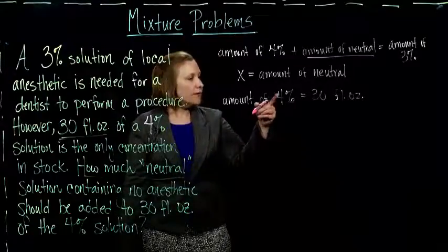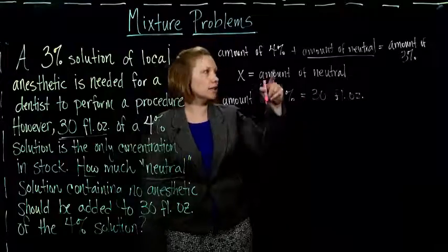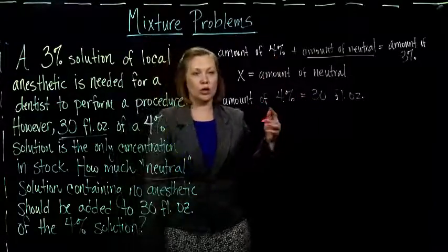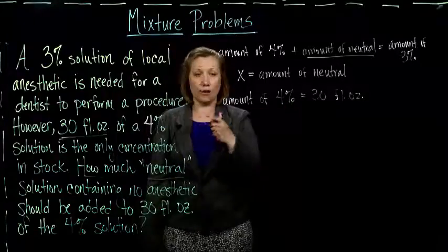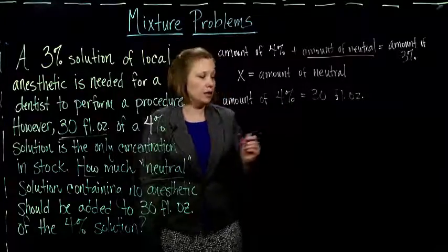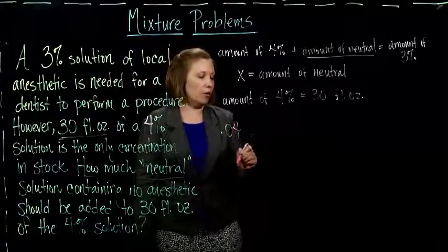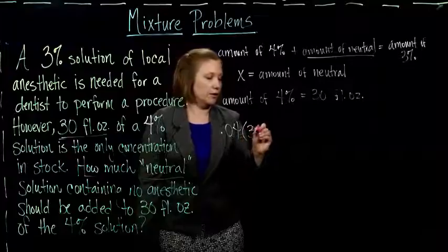So if I take this 30 fluid ounces and take 4% of it, that will give me how much total of the anesthetic, of the pure anesthetic I have. So to take 4% of 30, you multiply 0.04 times 30.